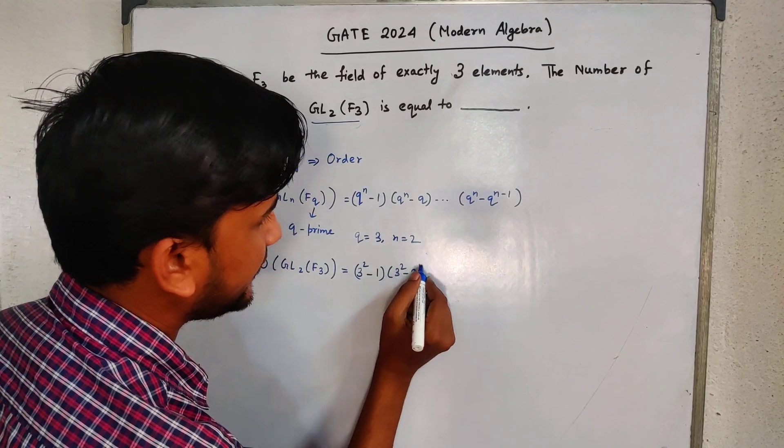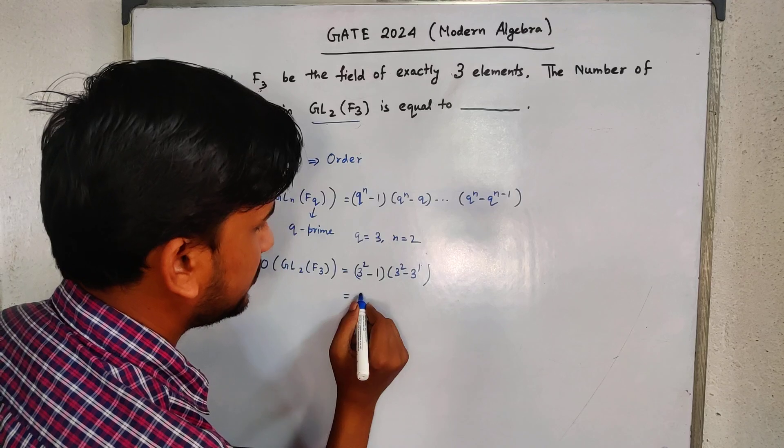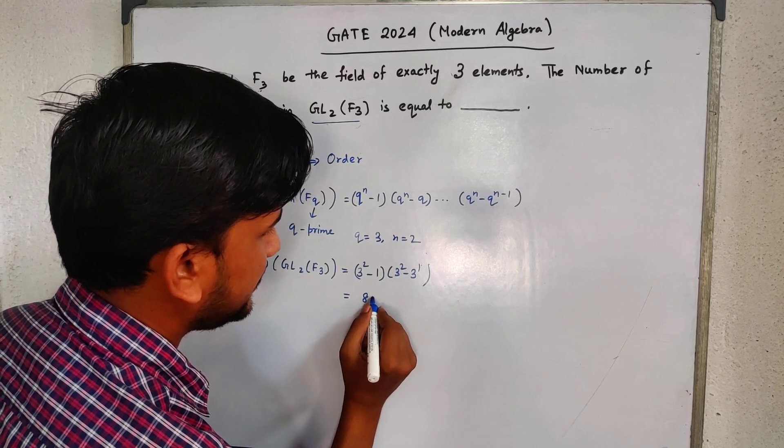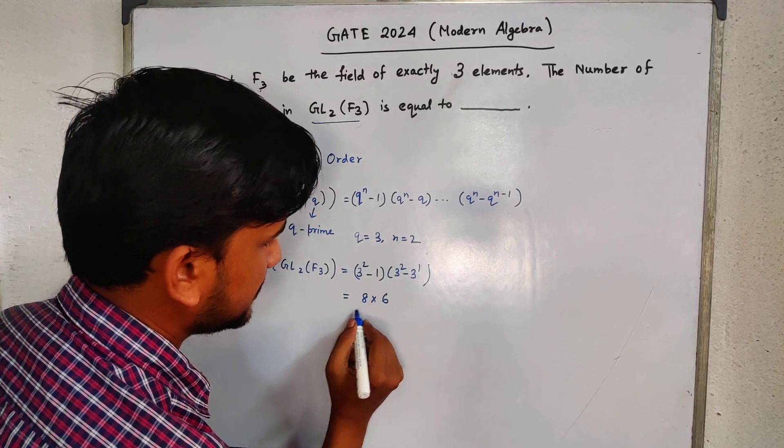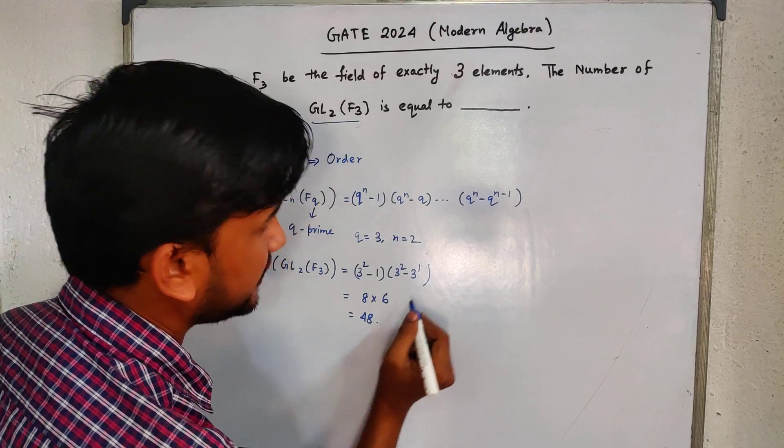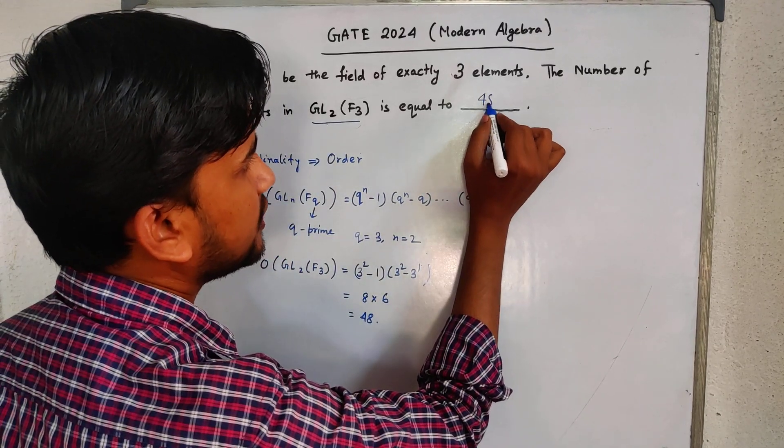This is equal to 3 to the power (n-1), which means 8, times this is 6. This is equal to 48. So our correct answer is 48.